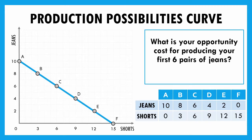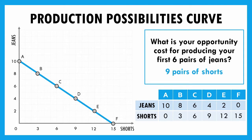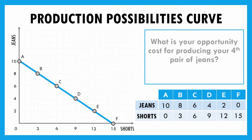What's the opportunity cost of your first six pairs of jeans? 'First six' assumes we're starting at zero — we go from zero up to six, or from point F to point C. By adding jeans, we have to give something else up. We have to drop our short production from 15 down to six. 15 minus six leaves us with nine pairs of shorts that we had to give up. So our opportunity cost to produce those first six pairs of jeans is nine pairs of shorts.